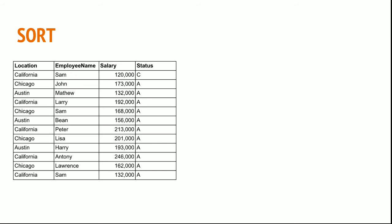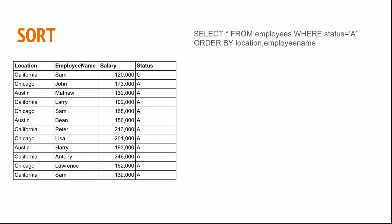If I want to sort the data based on location and then the employee name, I can do that for all active employees using the following statement: SELECT * FROM employees WHERE status = 'A' ORDER BY location, employee name. This will sort my data based on location and employee name for all active employees, as you can see in the result.